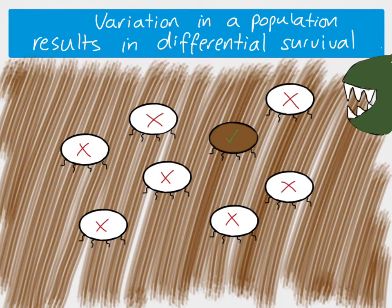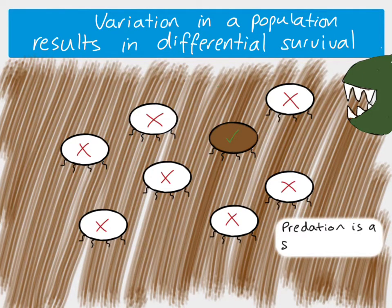Because we've had variation, we've got differential survival — some survive and some don't. In this case, predation is what we call a selection pressure. The predation is the thing which is causing some individuals to die and some to survive, based on which ones have a more advantageous phenotype or more advantageous characteristics.